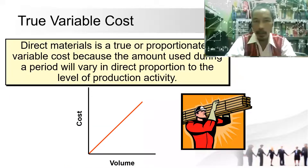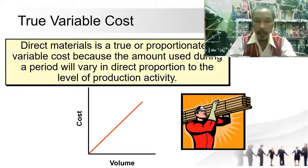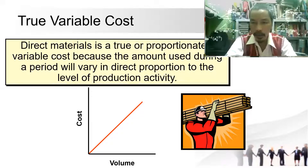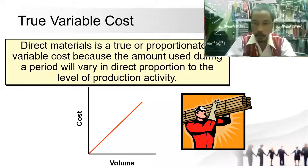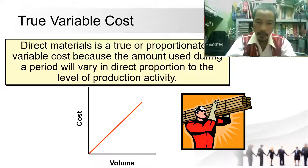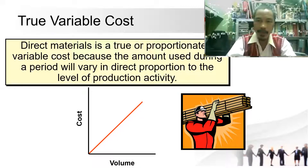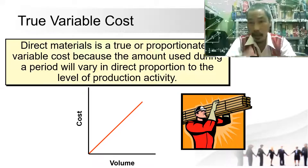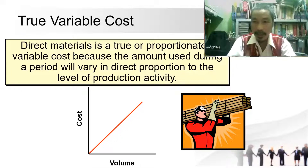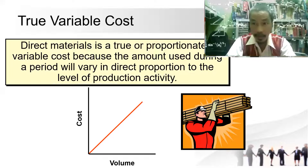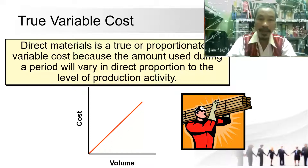True variable cost: direct material is a true or proportionately variable cost because the amount used during a period varies in direct proportion to the level of production activity. In the volume-versus-cost diagram, there is a straight line — as volume increases, cost also increases proportionately. If volume increases by 10%, cost increases by 10%; if volume increases by 30%, cost increases by 30%.